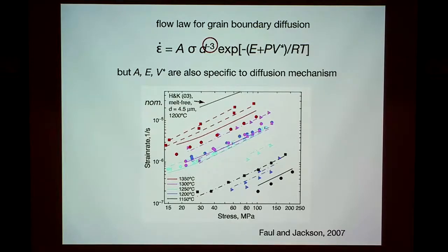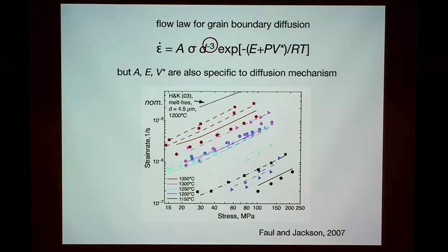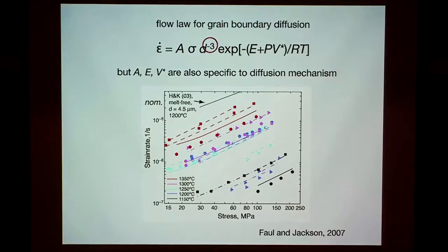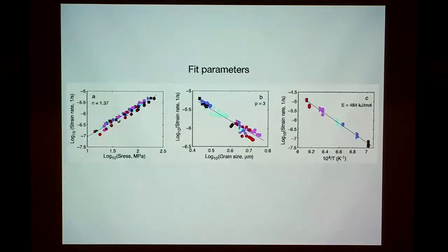In the Earth we think we have grain sizes in the millimeter to centimeter range, based on xenoliths and ophiolites. But most of these experimental grain sizes are less than 10 microns. The colors correspond to temperature, and you can see that a whole bunch of temperatures overlap when clearly they should be separated — the reason is grain size variations in these samples. Even at different temperatures they overlap because we have a very strong cubic grain size dependence.